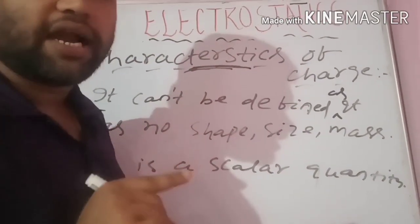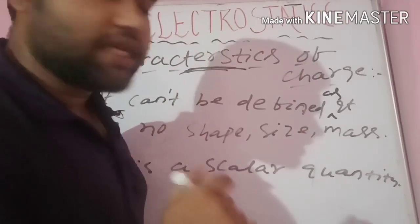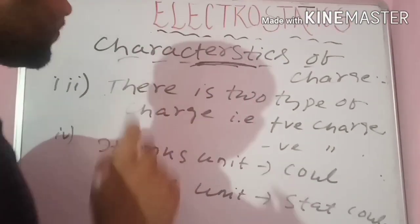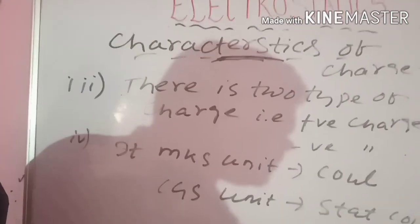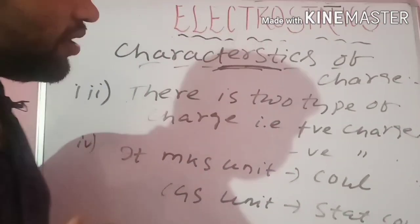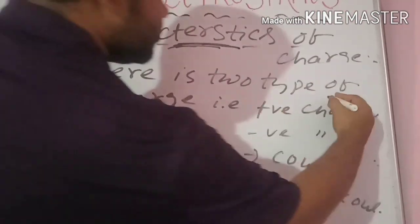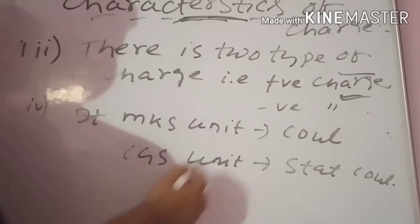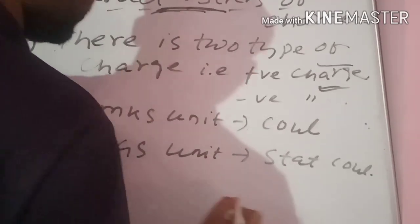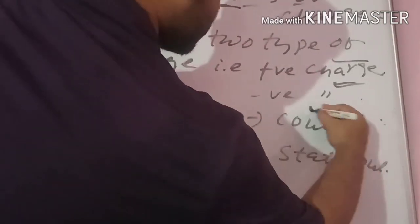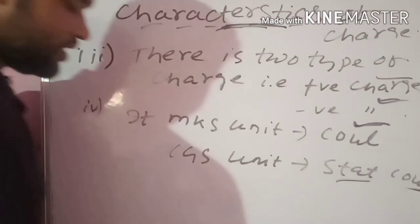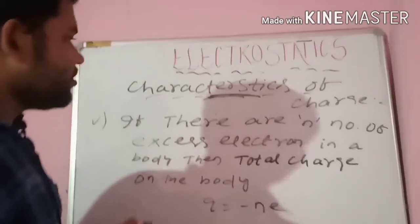Charge can be added using the algebraic sum method. There are two types of charge: positive charge and negative charge. The MKS unit of charge is coulomb, and the CGS unit is stat-coulomb.